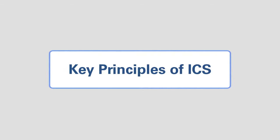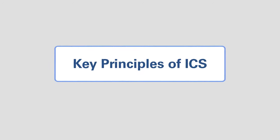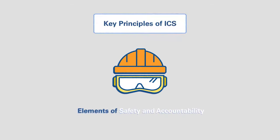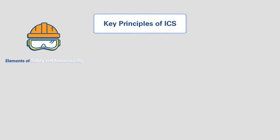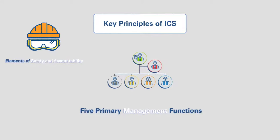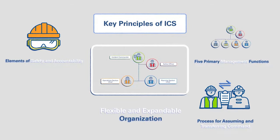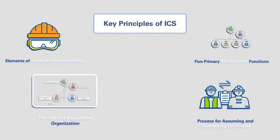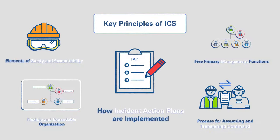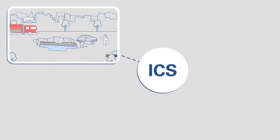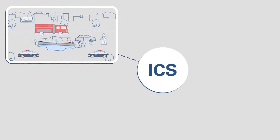ICS uses a number of key principles which guide response activities. The following modules highlight a few of these principles, including elements of safety and accountability, the five primary management functions, the process for assuming and transferring command, a flexible and expandable organization, and how incident action plans are implemented to provide a common direction. With ICS, any agency can effectively manage incidents that reach beyond the scope of their day-to-day work.